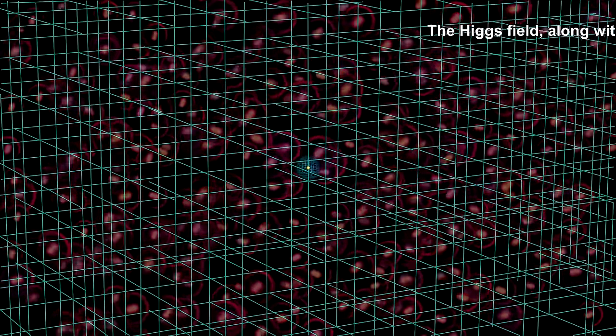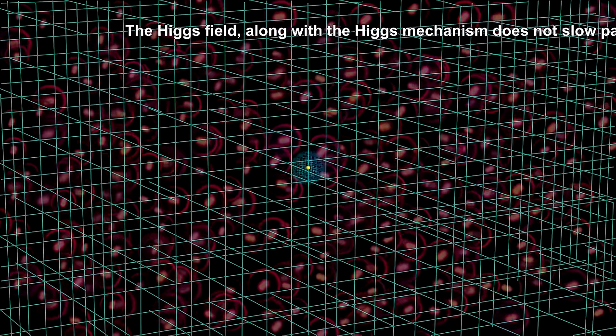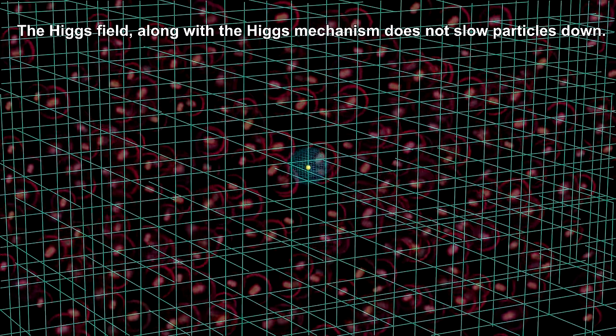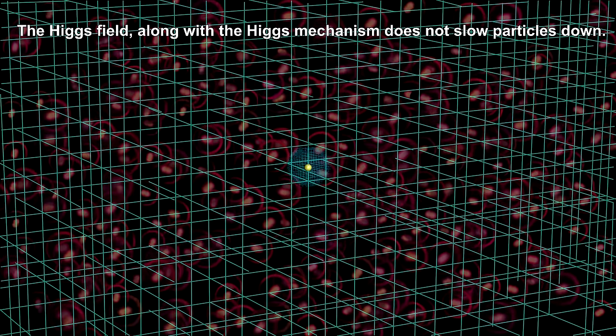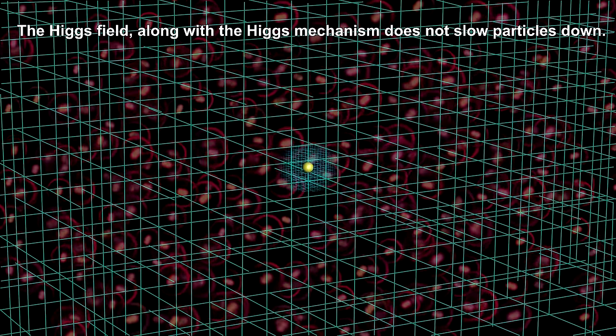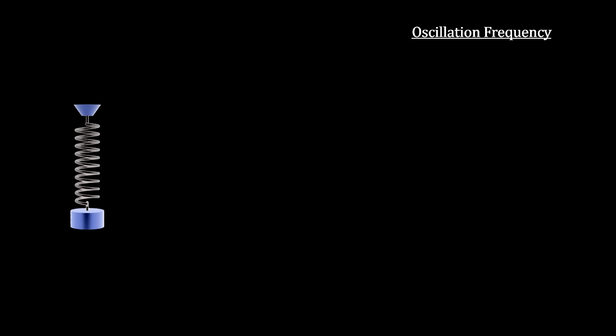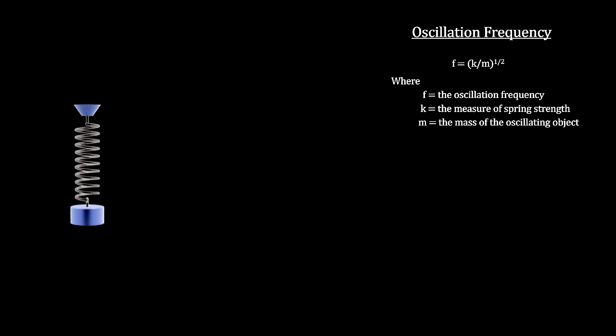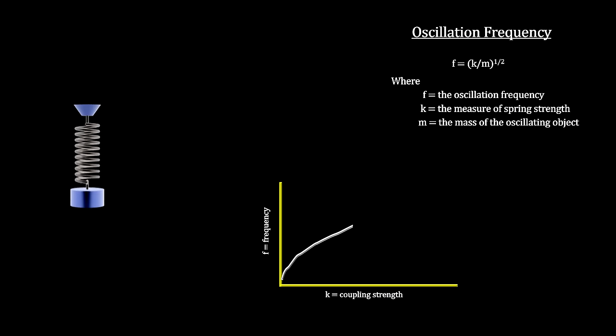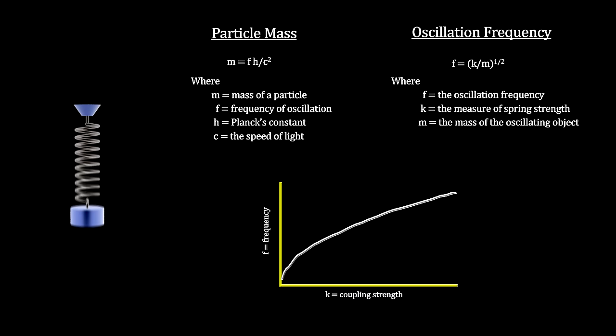You'll note that the particles that interact with the Higgs field are not slowed down. The Higgs field is not like molasses. If the Higgs field slowed particles down in any way, objects in motion would no longer remain in motion. This is not what we see in the real world. Here's one more important idea about mass. The reason the masses are different for different particles is that the coupling strength of the interaction with the Higgs field is stronger for some particles than others. Increasing the coupling strength is like increasing the stiffness of the spring in a harmonic oscillator. It has the effect of increasing the oscillator's frequency. And we have already determined that if we increase a particle's oscillation frequency, we increase its mass.